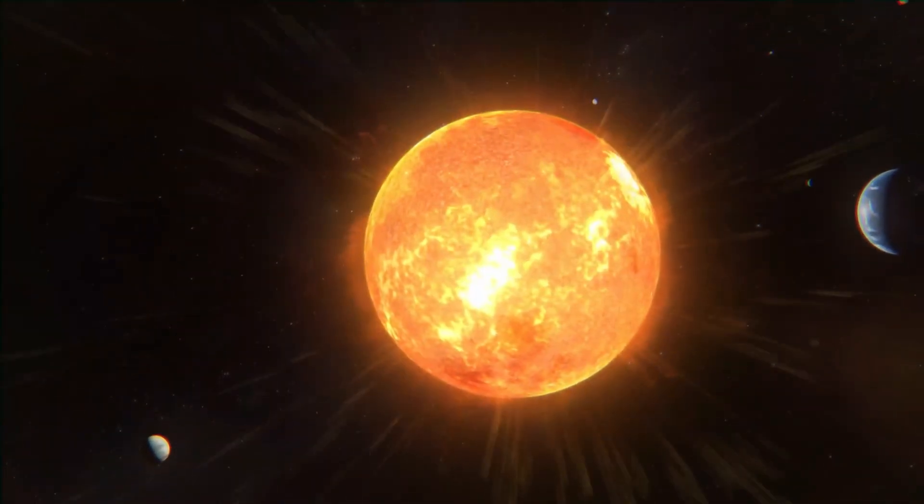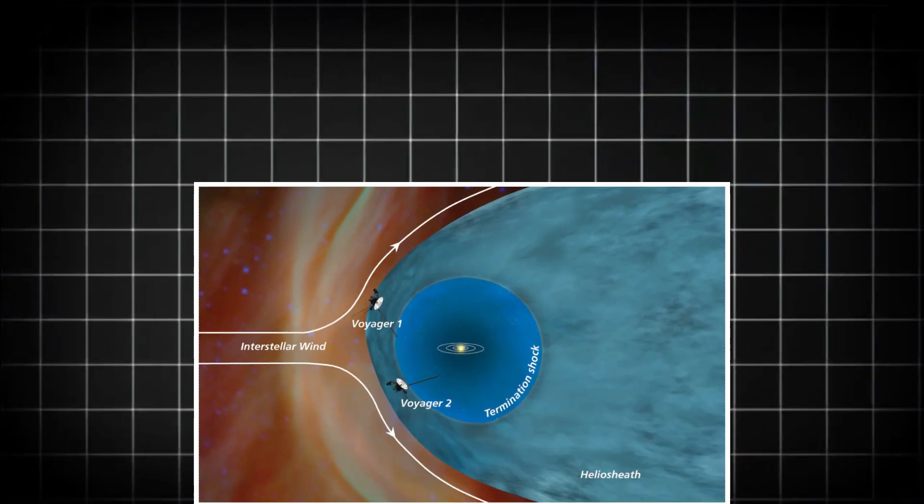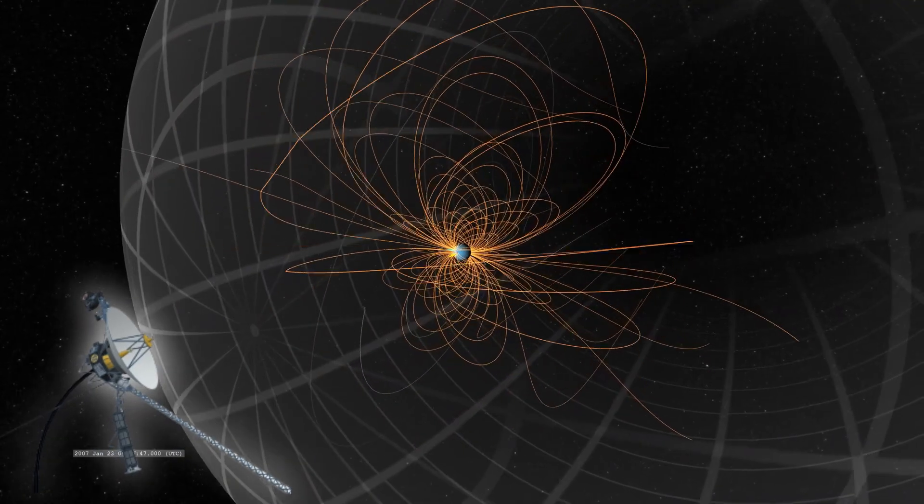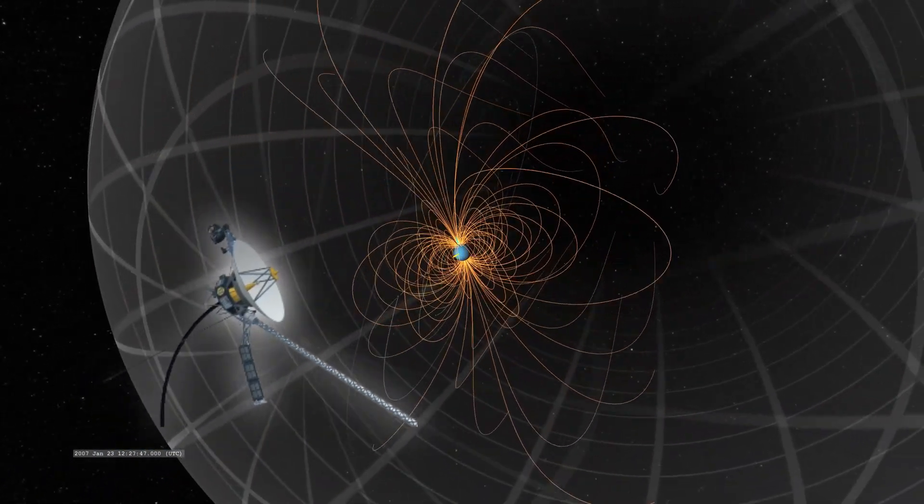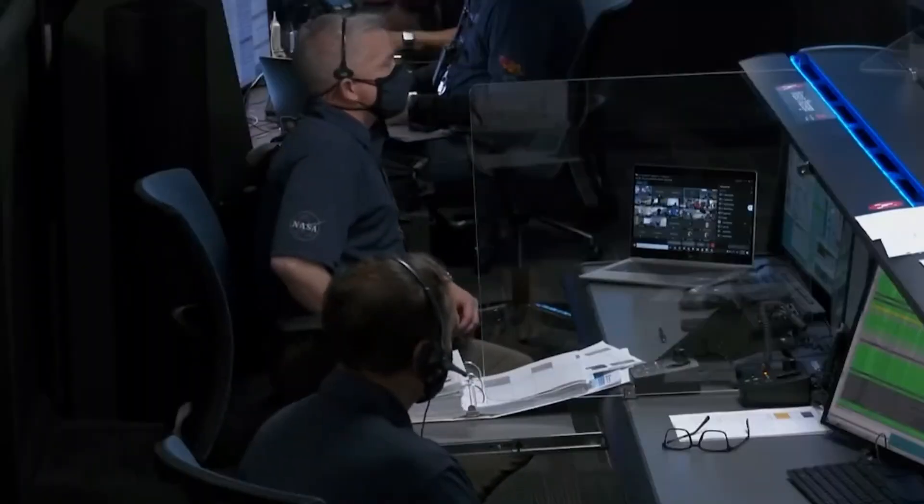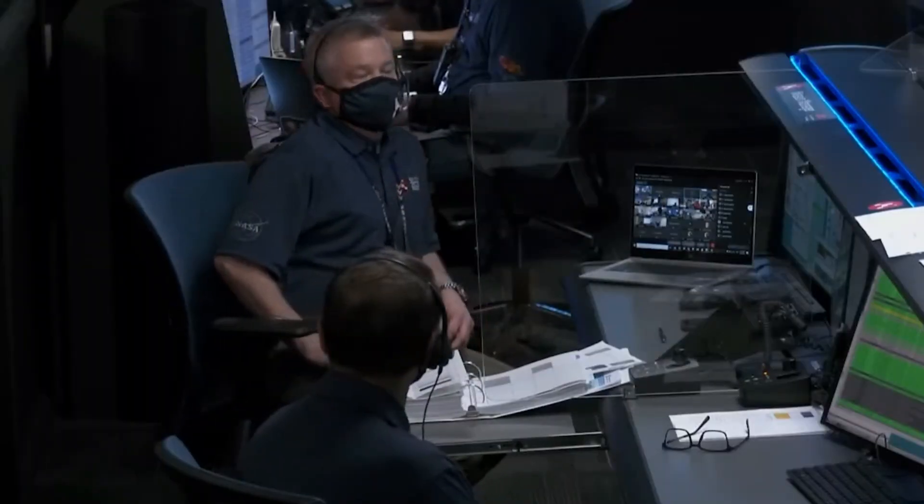Imagine this. The sun's magnetic influence was thought to fade as the spacecraft crossed into interstellar space. But instead, Voyager has encountered a magnetic force stronger and more complex than anyone anticipated. This unexpected find isn't just a scientific curiosity.